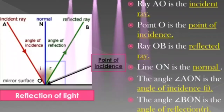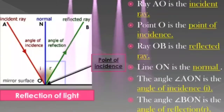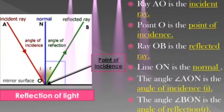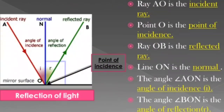Students, here ray AO is the incident ray. Point O is the point of incidence. Ray OB is the reflected ray. Line ON is the normal. The angle AON between the incident ray and the normal is the angle of incidence. The angle BON between the reflected ray and the normal is the angle of reflection.